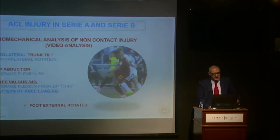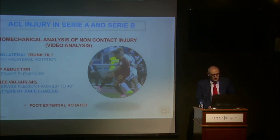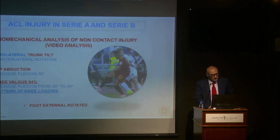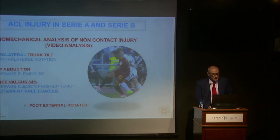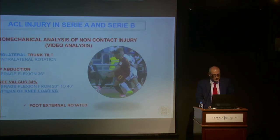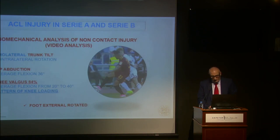We also performed biomechanical analysis of non-contact injury. What we found is really important: there is homolateral trunk tilt and contralateral rotation, along with hip abduction. Evaluating video analysis, the average hip flexion is about 36 degrees. We found knee valgus in 84% of cases, with average flexion of 20 to 40 degrees. The foot is normally externally rotated. This is what we found evaluating more than 100 videos.